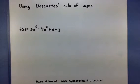Hello and welcome. In this example, I want to show you how to use Descartes' Rule of Signs in order to determine the number of possible positive zeros and the number of possible negative zeros in our polynomial.